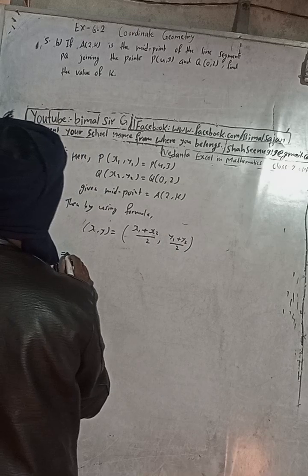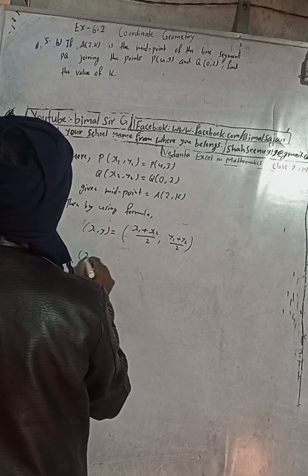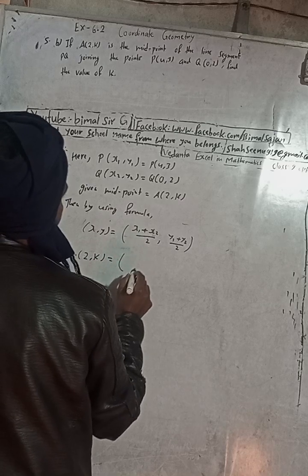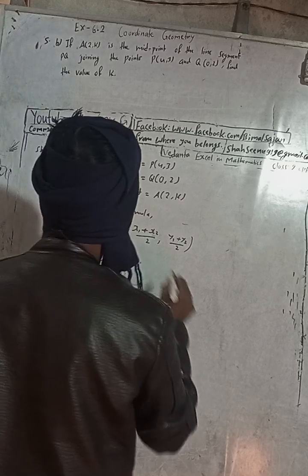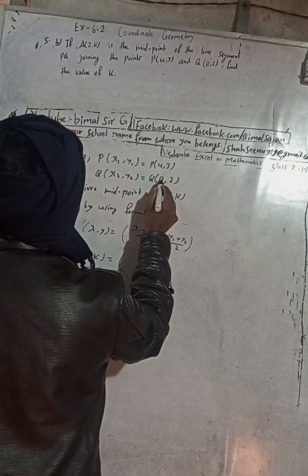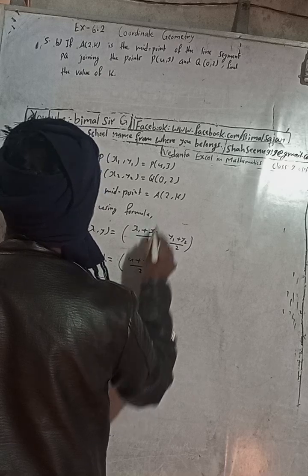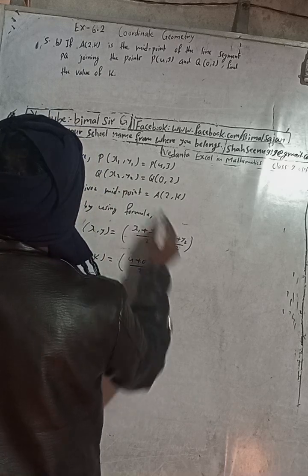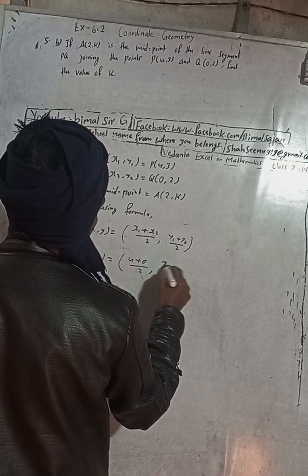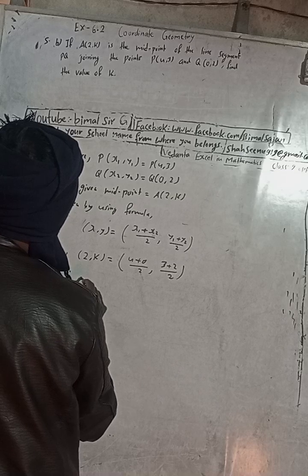This implies that the midpoint (2, k) is equal to: x1 is 4 and x2 is 0, so we get (4 + 0)/2 comma (y1 + y2), meaning (3 + 2)/2.